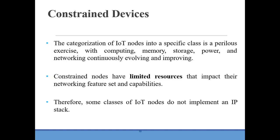Constrained devices is the next communication criteria. The Internet Engineering Task Force acknowledges in RFC 7228 that different categories of IoT devices are deployed. Categorizing IoT nodes into specific classes is a tedious exercise as computing, memory, storage, power, and networking are continuously evolving. Constrained nodes have limited resources that impact their networking feature set and capabilities, and therefore some classes of IoT nodes do not implement an IP stack.